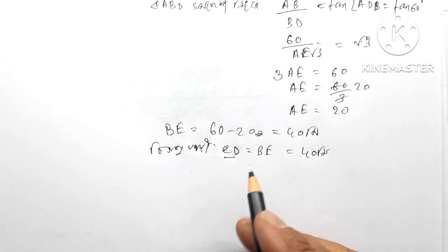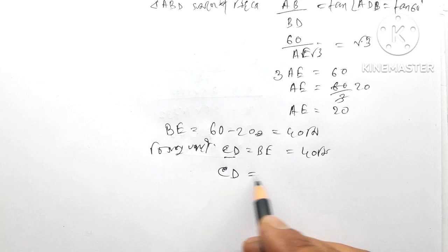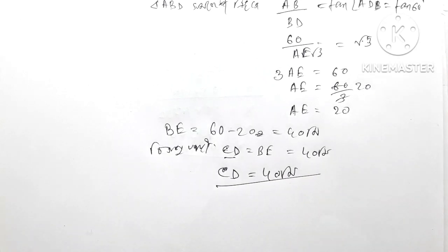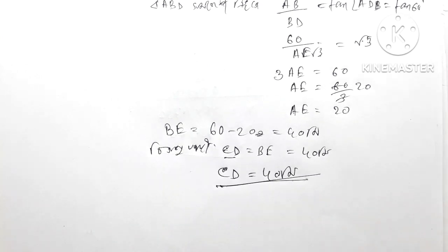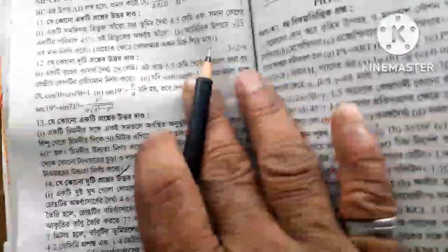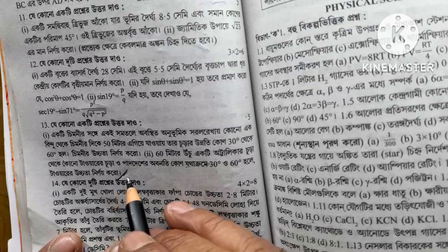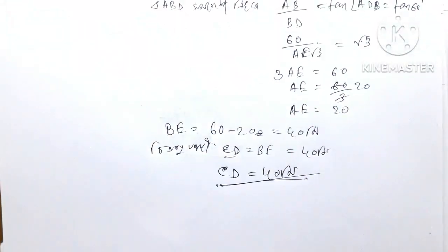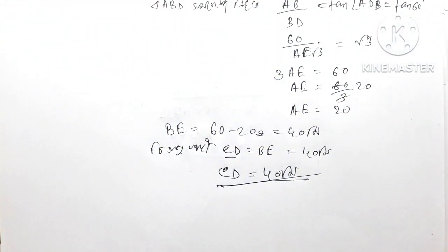Now the square is ABE. So CD is 24 meters. So the square is ABE. So the answer is found. Please subscribe to the channel. Guys, please note that the two results are confirmed. You should subscribe to the channel.